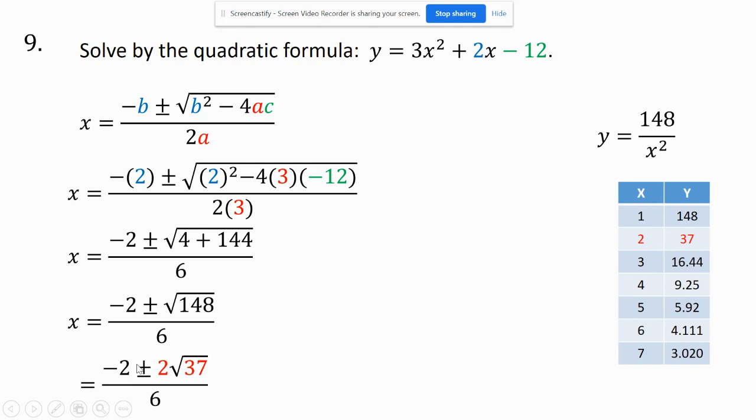Now because I have a 2, what I call on the outside of the radicand, and a 2 here and a 6 here, they're all divisible by 2. I can reduce the outside numbers only, not the radicand. So I divide them all by 2. I have negative 1 plus or minus the square root of 37 over 3. And I don't have to write that 1.